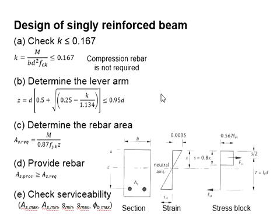This slide outlines the design process for singly reinforced beam. First of all, you need to check the K factor. When it is less than 0.167, you know that compression reinforcement bar is not required.